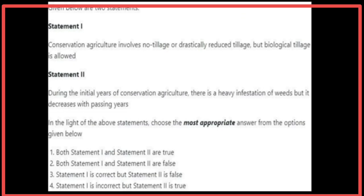Given below are two statements. Statement 1: Conservation agriculture involves no tillage or drastically reduced tillage, but biological tillage is allowed — Statement 1 is correct. Statement 2: During the initial years of conservation agriculture there is heavy infestation of weeds, but it decreases with passing years — Statement 2 is true. Both statements are true.